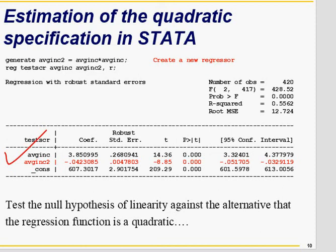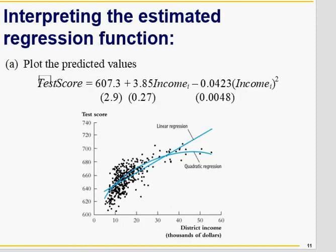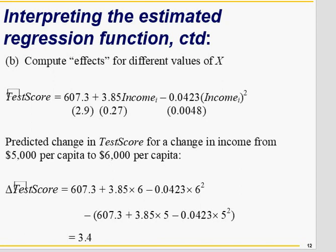Therefore, the quadratic model seems a better fit over the linear one. You can see that the quadratic fit and the linear fit are plotted together, and the quadratic apparently fits better than the linear model. At the same time, the coefficient on income squared is statistically significant.